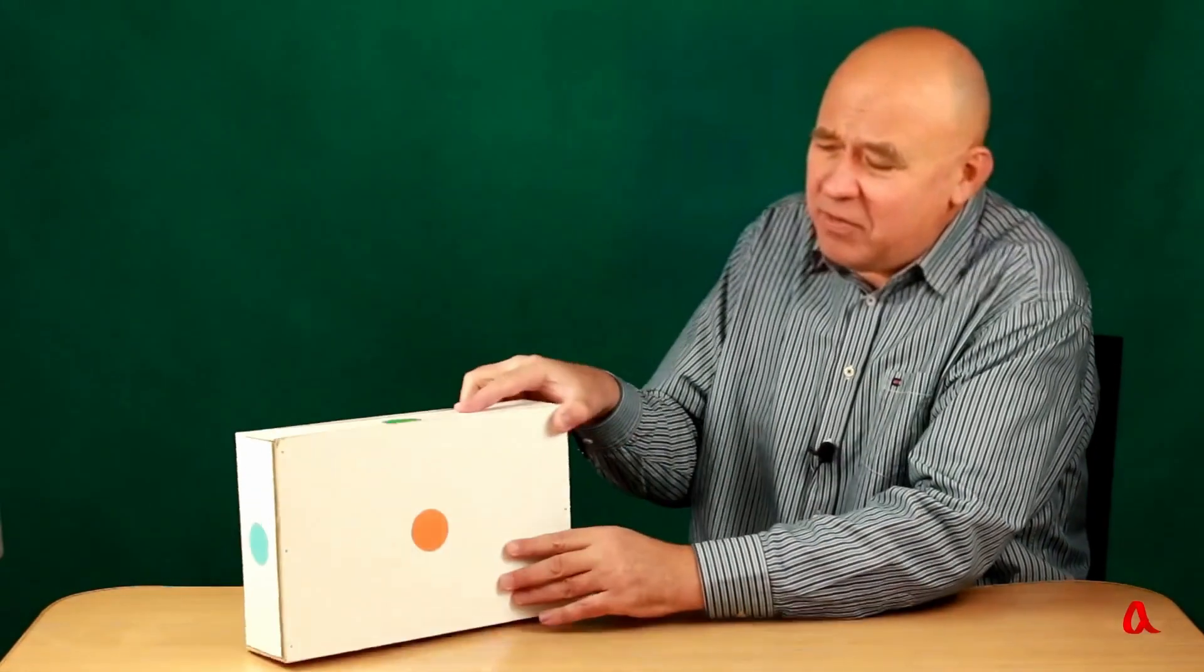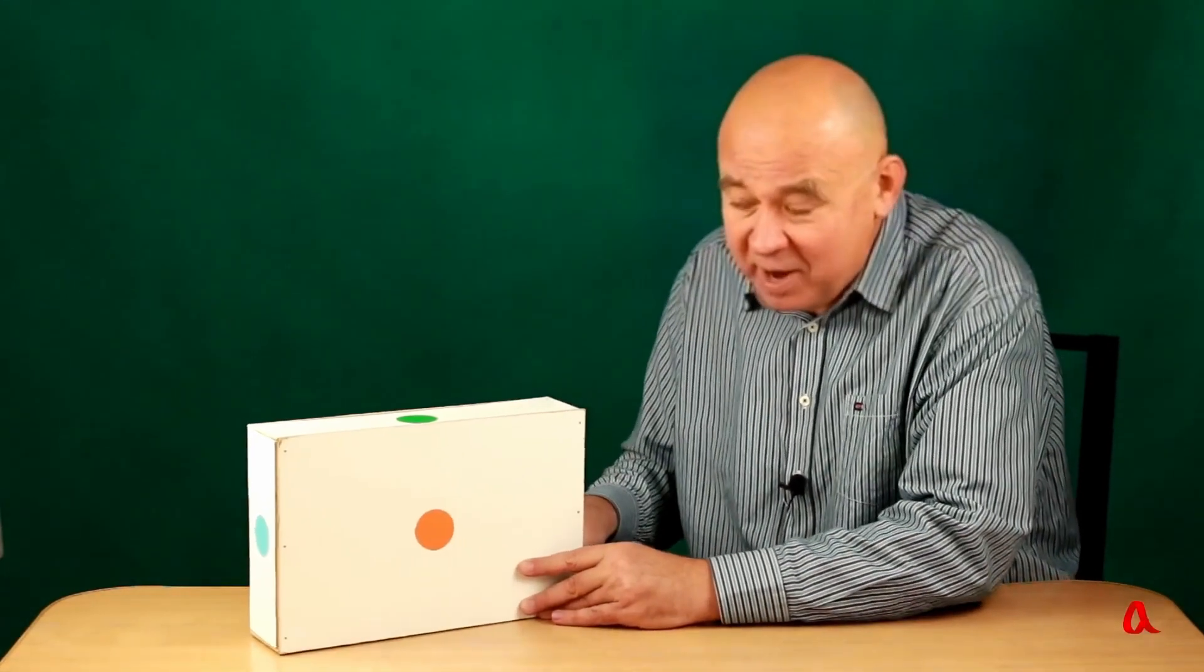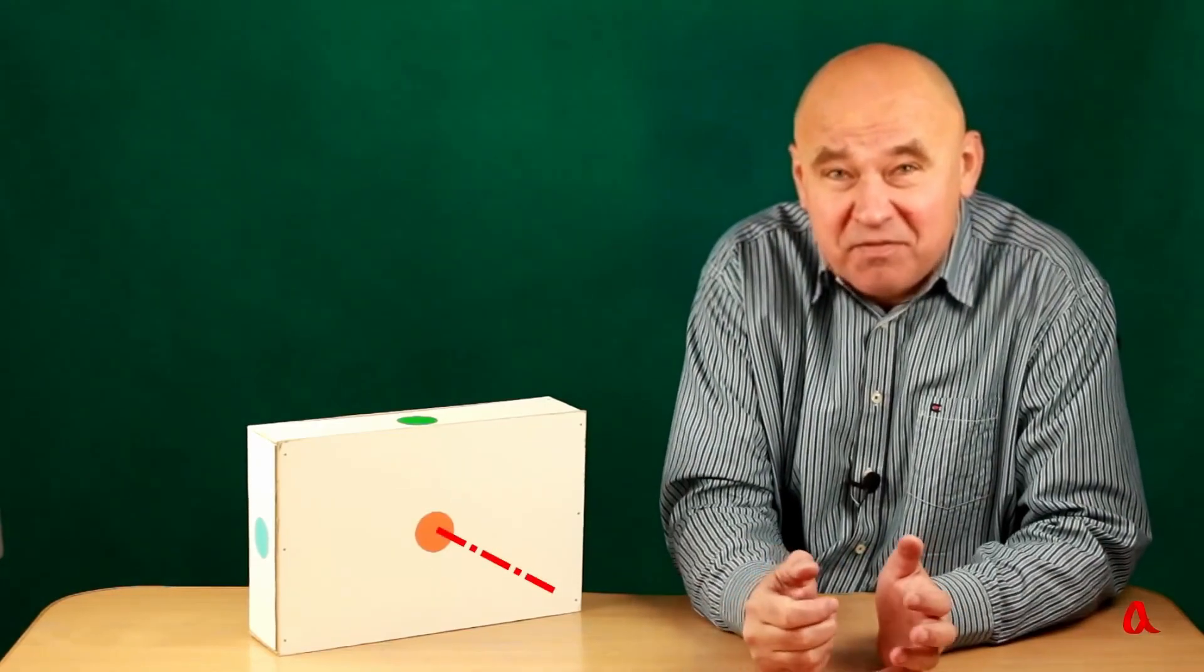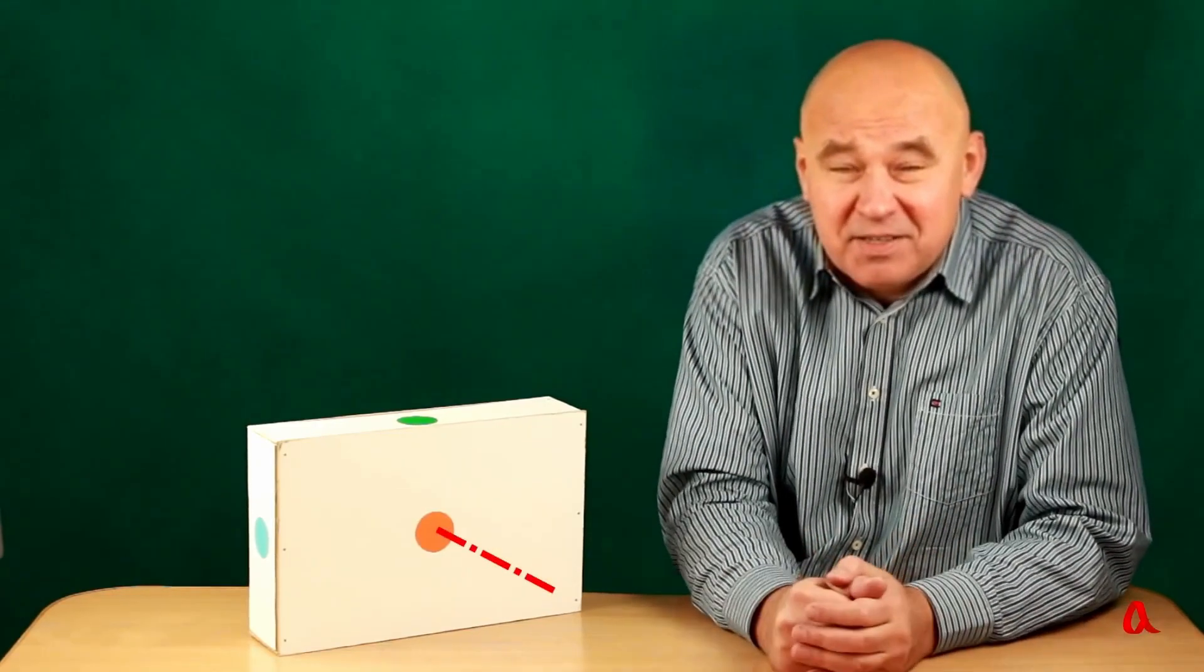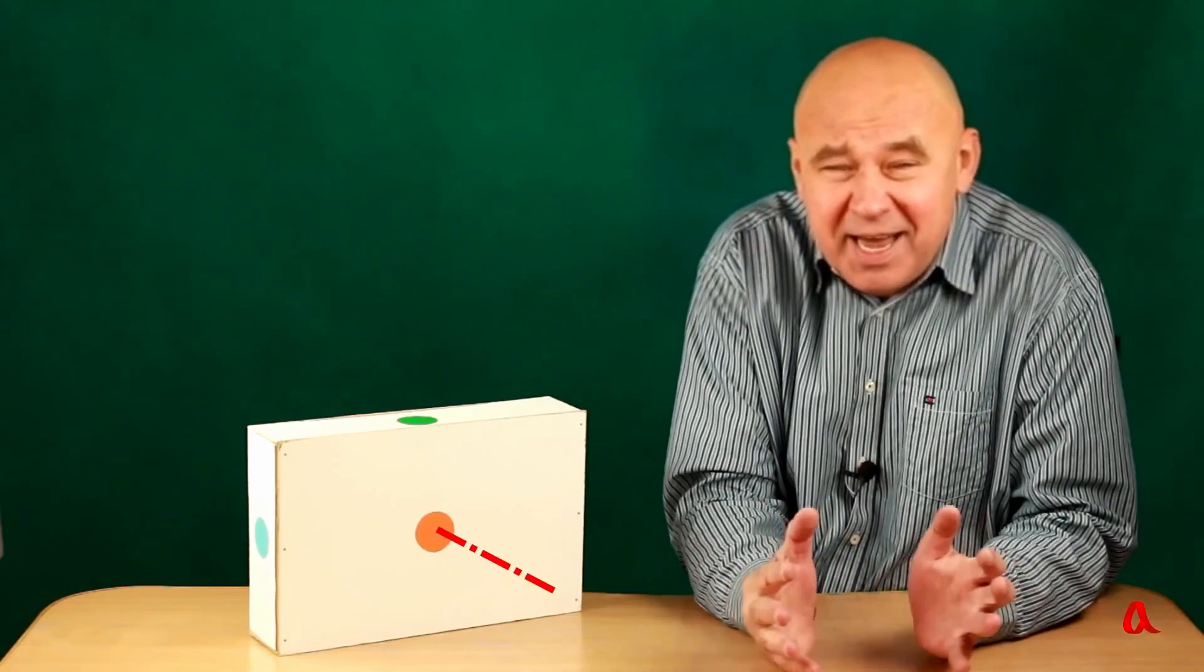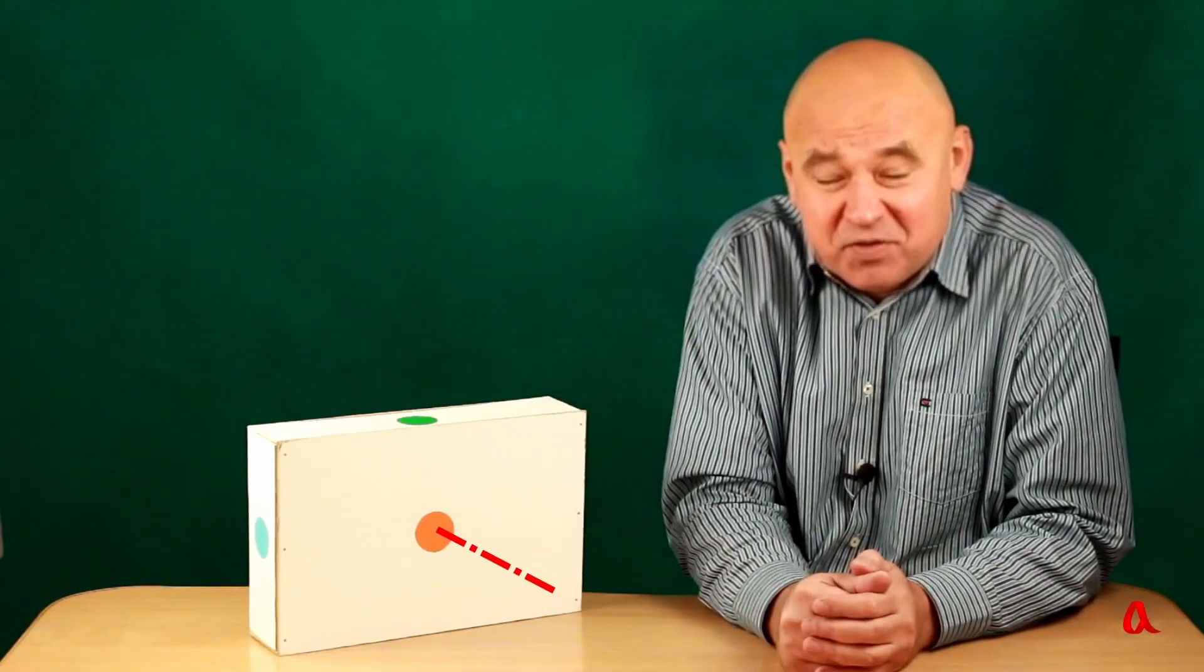It will be convenient for me to explain this theorem using the example of this rectangular box. While rotating around the red axis, the moment of inertia is at its maximum because the various parts of the body are positioned at their farthest distance from the axis, leading to increased rotational inertia.